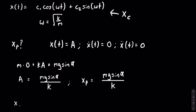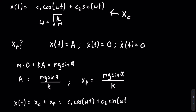Adding the complementary and particular solutions together, the final solution is x of t equals c1 cosine of omega t plus c2 sine of omega t plus m g sine of alpha divided by k. That is it for this video — I hope you enjoyed. Thank you, bye.